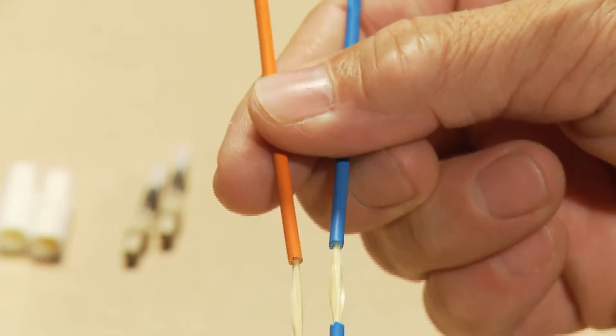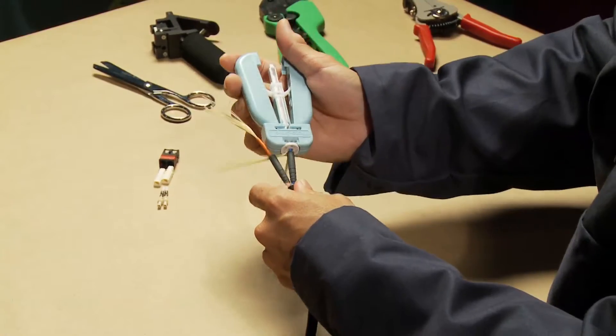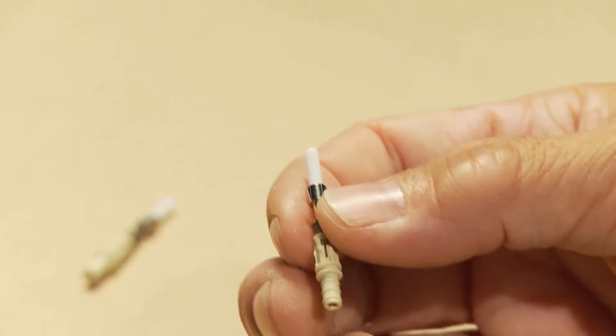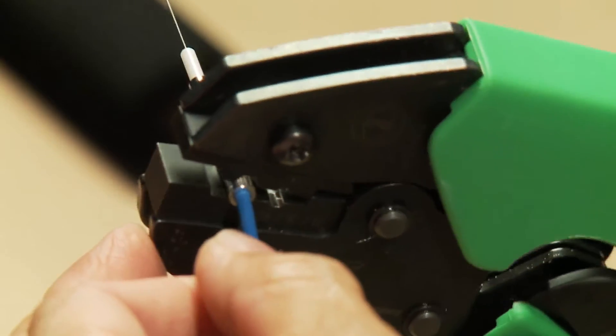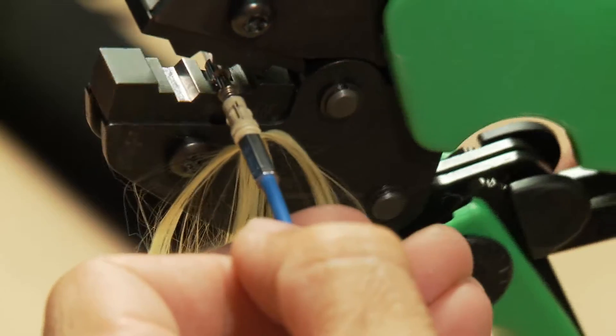Strip the outer jacket, remove the protective buffer, install the connector. Two simple crimps capture the fiber connector and outer jacket.